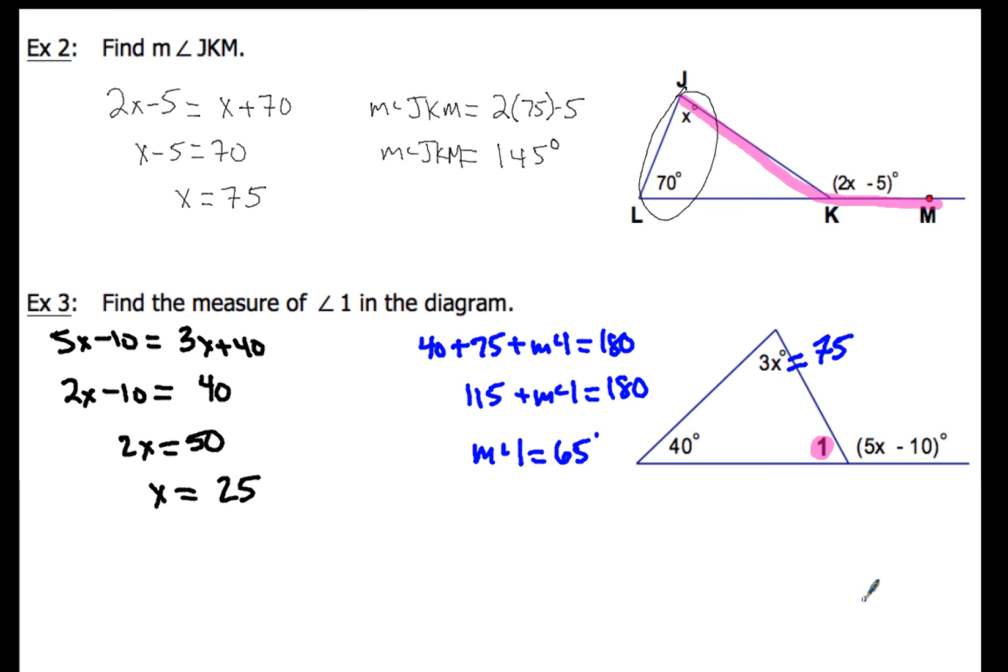Now I always want to double check that. If I take 40 and 75 and 65 and add all of those up, do I get 180? I sure do. Now that's one way you could get it, but sometimes people might look over here at the 5x minus 10. And if they would have plugged in x being 25 for that, 5 times 25 gives me 125 minus 10. So this angle right here would have been 115 degrees. Now if that angle is 115, then angle 1 plus the 115, that should have a sum of 180 because they would be a linear pair. So that's another way you could think about it. 180 minus 115 gives me the measure of angle 1. So when I do that, I get 65 degrees again for the measure of angle 1.